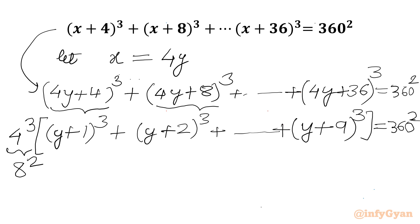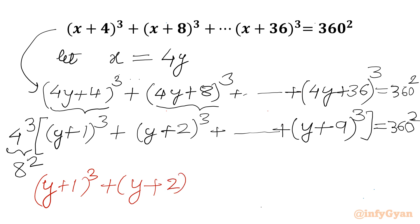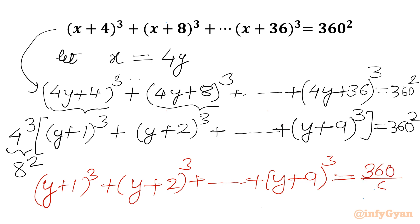4³ is 64 and 8² is 64. Let us divide both sides by 8². So the left side becomes (y+1)³ + (y+2)³ + ... + (y+9)³, and the right side becomes 360² over 8², which simplifies to 45².